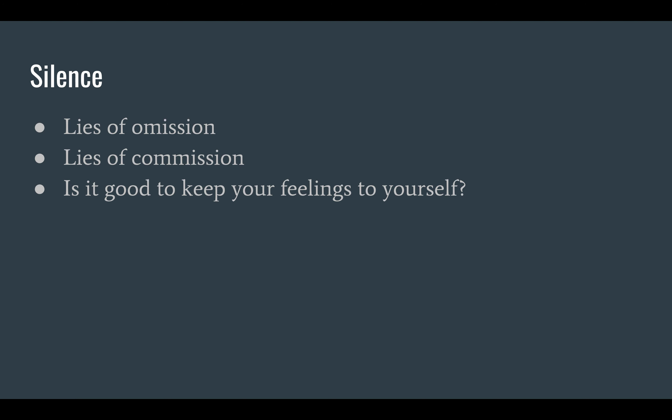Related to self-disclosure is the notion of silence. We've talked about how you can never not communicate — you're like a transmitter that can't be turned off. So when we're silent, we could be committing a lie of omission: sometimes we lie simply by not telling people things, by maintaining silence. If I didn't tell my wife about the strippers in Las Vegas, that would be a lie of omission. At other times we commit lies of commission — that's when we just straight up lie on purpose. Sometimes we need to ask ourselves: is it best to keep our feelings to ourselves, or commit a lie of omission in order to maintain a relationship?